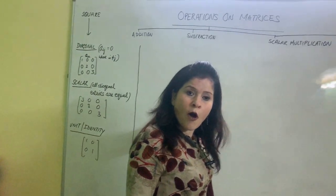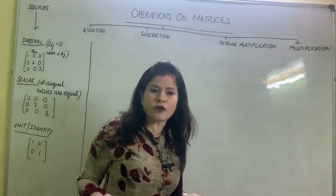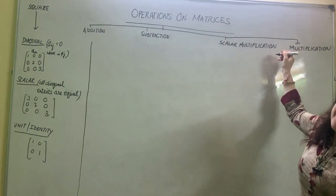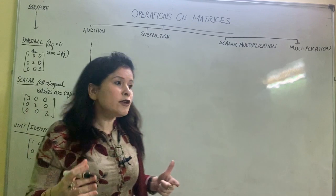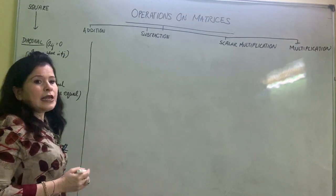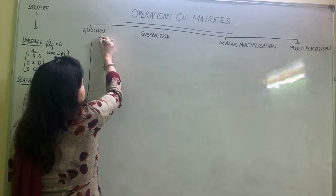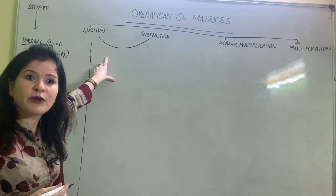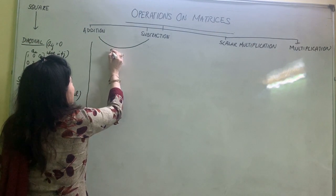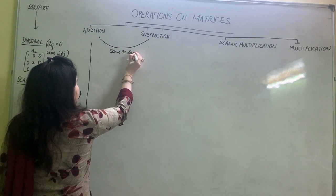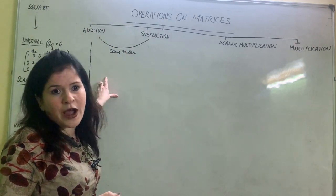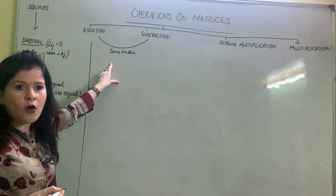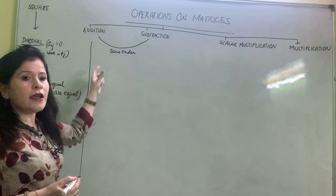Now we come to the main topic: operations on matrices. We have four operations — addition, subtraction, scalar multiplication, and we will find a new way to substitute division. For addition and subtraction, both follow the same prerequisite: we can only add and subtract those matrices which carry the same order. The order has to be identical.